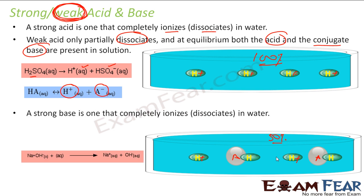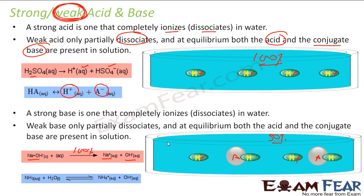The acid that ionizes more is strong; the acid that ionizes less is weak — same logic applies to bases. A strong base is one that dissociates completely in water. For example, NaOH is a very strong base — it becomes Na⁺ and OH⁻, with almost 100% ionization. A weak base is partially dissociated and exists in equilibrium, with both the base and its conjugate acid present. Ammonia (NH3) is a weak base: in water it forms NH₄⁺ and OH⁻, but only a very small fraction ionizes — hence the equilibrium sign.